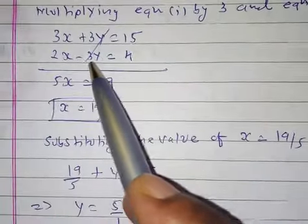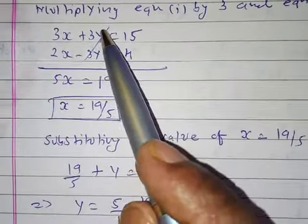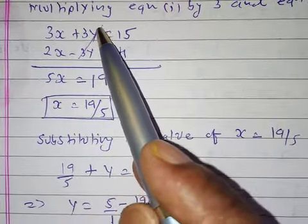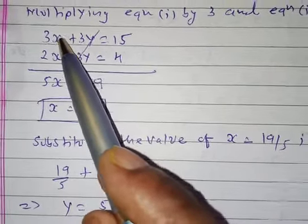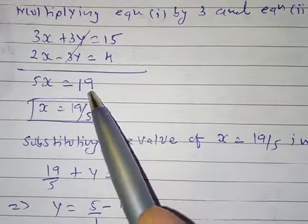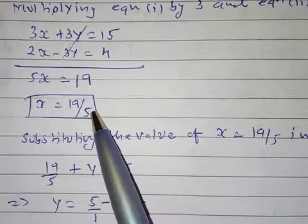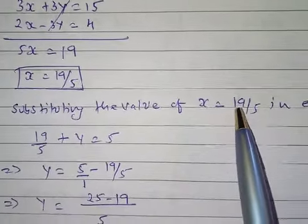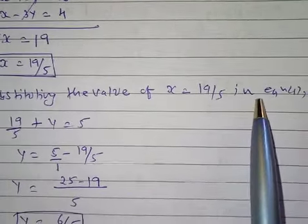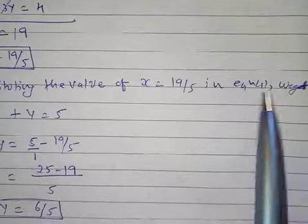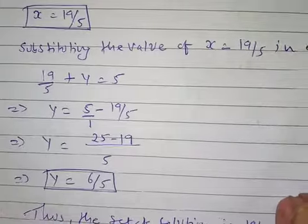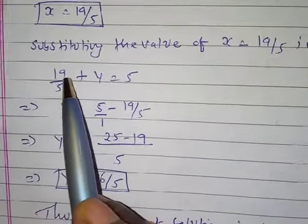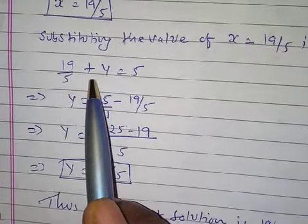We are not changing the sign because the plus and minus cancel out automatically. So 5x is equal to 19, meaning x is equal to 19 by 5. Substituting x equals 19 by 5 into equation 1, we get 19 by 5 plus y is equal to 5.